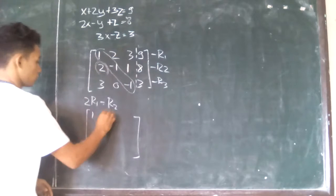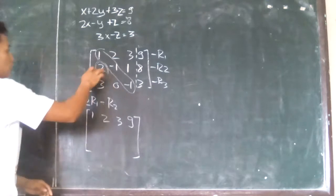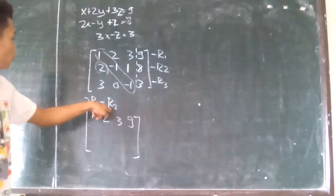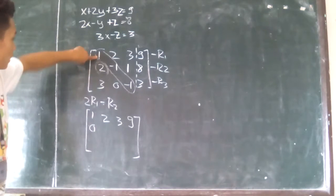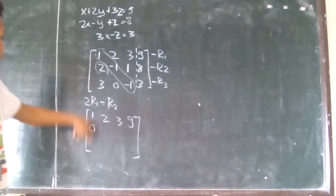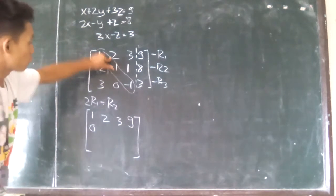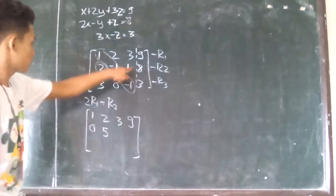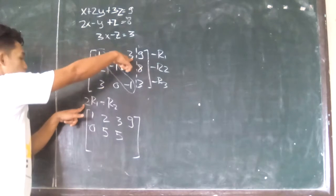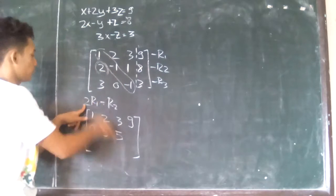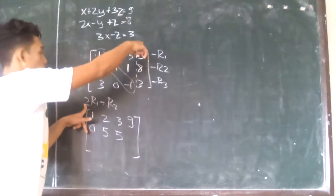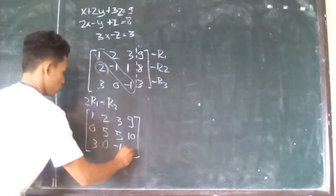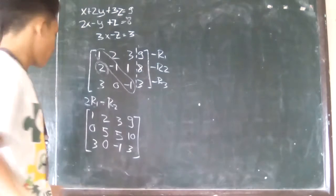So we copy row 1: 1, 2, 3, and 9. Then for new row 2: 2 times 1 minus 2 is 0. 2 times 2 is 4 minus negative 1, which becomes positive 5. Then 2 times 3 is 6 minus 1 is also 5. 2 times 9 minus 8 is 10. Then copy row 3: 3, 0, negative 1, and 3.